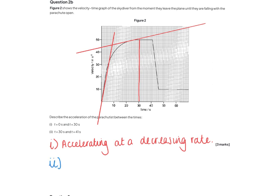For part ii, looking at t equals 30 seconds to t equals 41 seconds, we have a flat section of the line. The velocity is constant at 50 metres per second, so there is no acceleration.